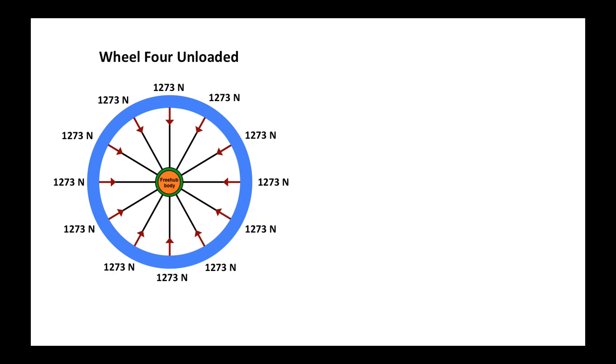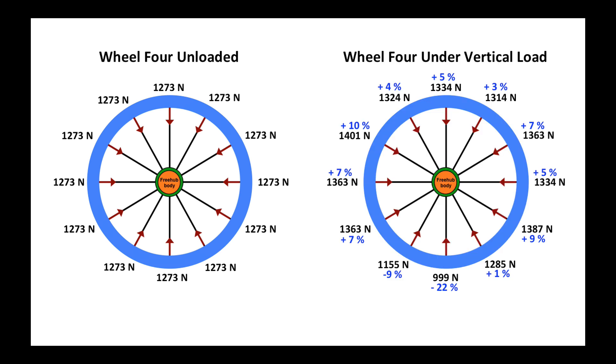Here is wheel four with all of the forces in static equilibrium, and wheel four, as shown here, is unloaded. Here on the right is wheel four under a vertical load, and we can note that the tension on the spoke at the bottom of the load bearing zone, although it has gone down,